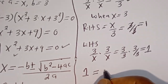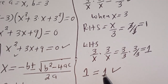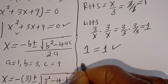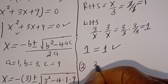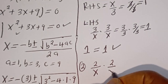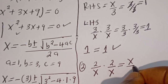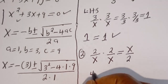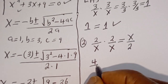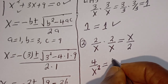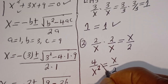Now let's solve another one: 2 divided by s multiplied by 2 divided by s is equal to s divided by 2. From here we have 2 times 2, that is 4, divided by s squared, is equal to s divided by 2. We can cross multiply from here.